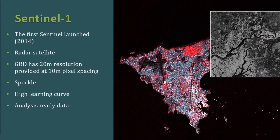Next up is Sentinel-1 — as the name implies, the first Sentinel launched, in 2014 — and this is a radar satellite. The resolution is about 20 meters per pixel for GRD data, provided at 10-meter pixel spacing. Radar is also inherently noisy, which we call speckle, and as mentioned previously the high learning curve is an issue for many users. That's why on Sentinel Hub you can get analysis-ready data by using select presets.